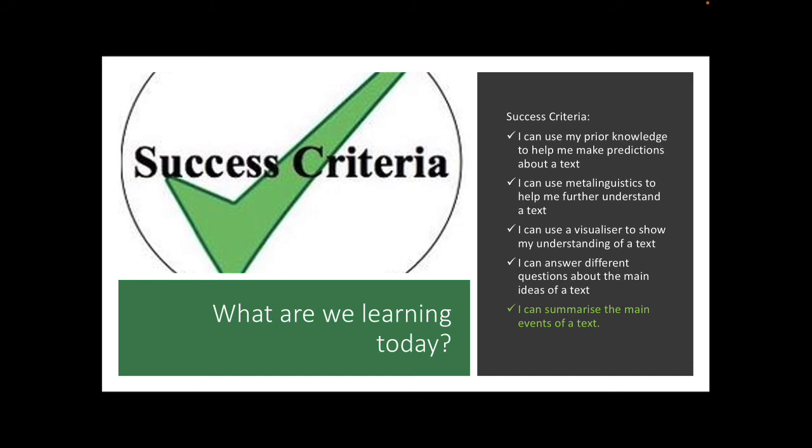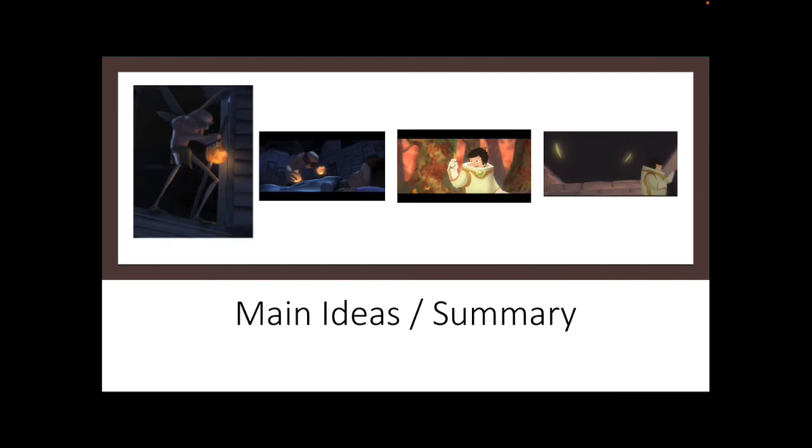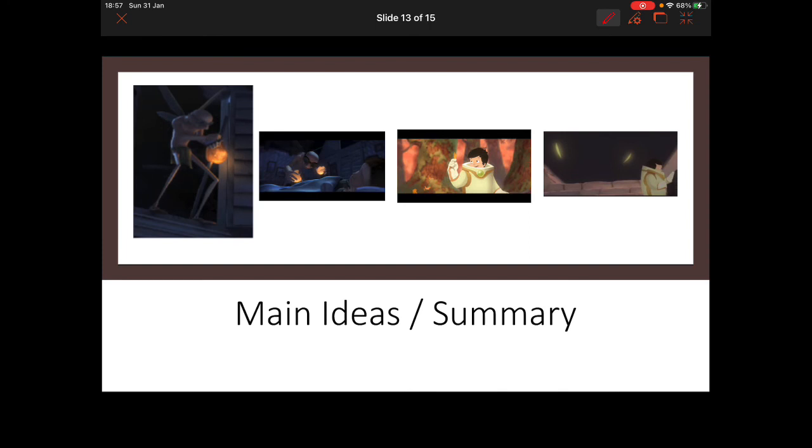Our last success criteria today boys and girls to show that we have a greater understanding of a text is can we summarise the main ideas or main events of a text. So here boys and girls I have summarised for you what happened in the text by selecting key moments that happened. So we have the introduction where we are introduced to the Dream Giver and we see him for the first time.